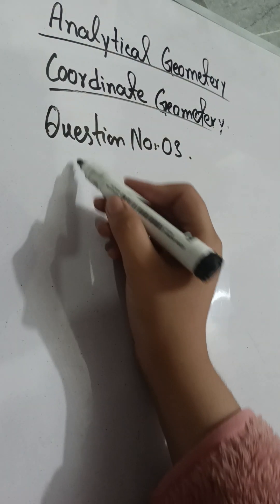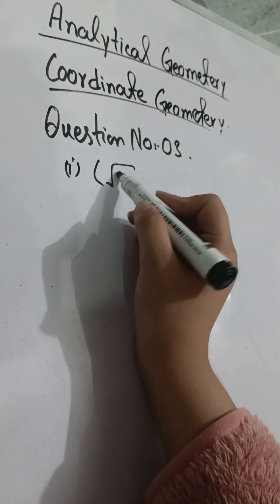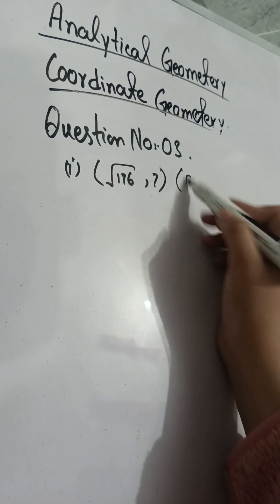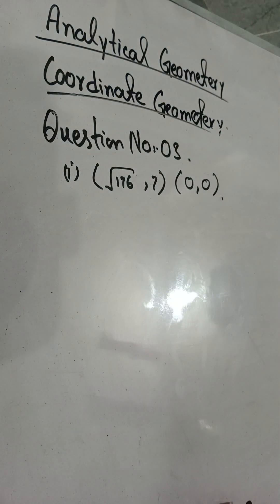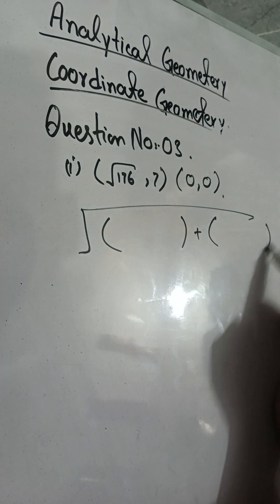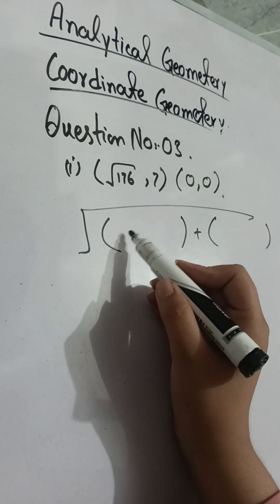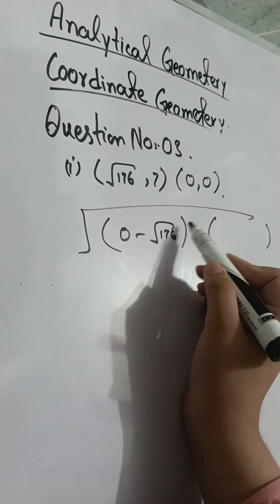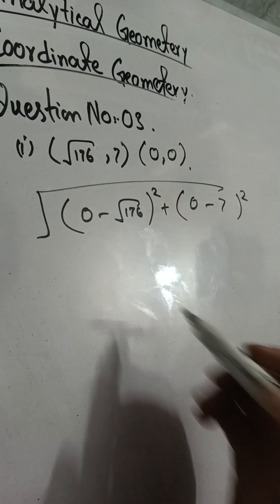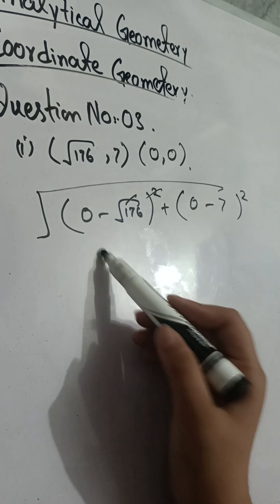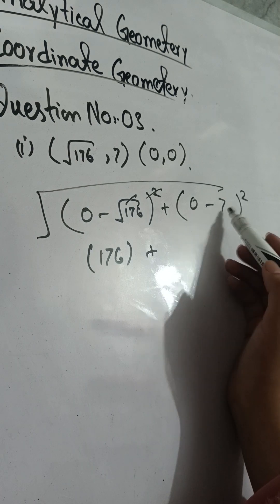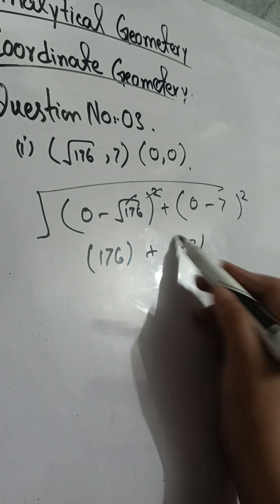In question number three, only one point is given. In part one, we are given the point (176, 7). The second coordinate is not given, so you assume it as zero. Now we will solve: zero minus 176, whole squared, and zero minus 7, whole squared. Since the scale is cancelled, zero minus 176 becomes 176.